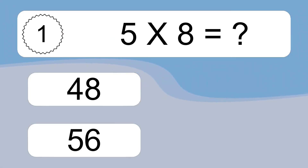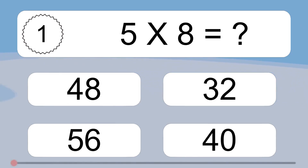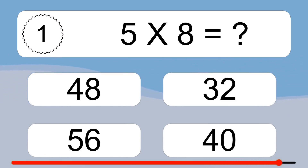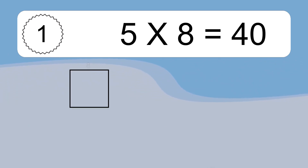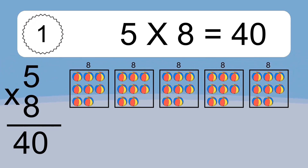5 times 8 equals what? 5 times 8 equals 40. We have 5 boxes, and each box has 8 colorful balls inside. If you count all the balls in all the boxes together, you will have 5 times 8 balls. This equals 40 balls.